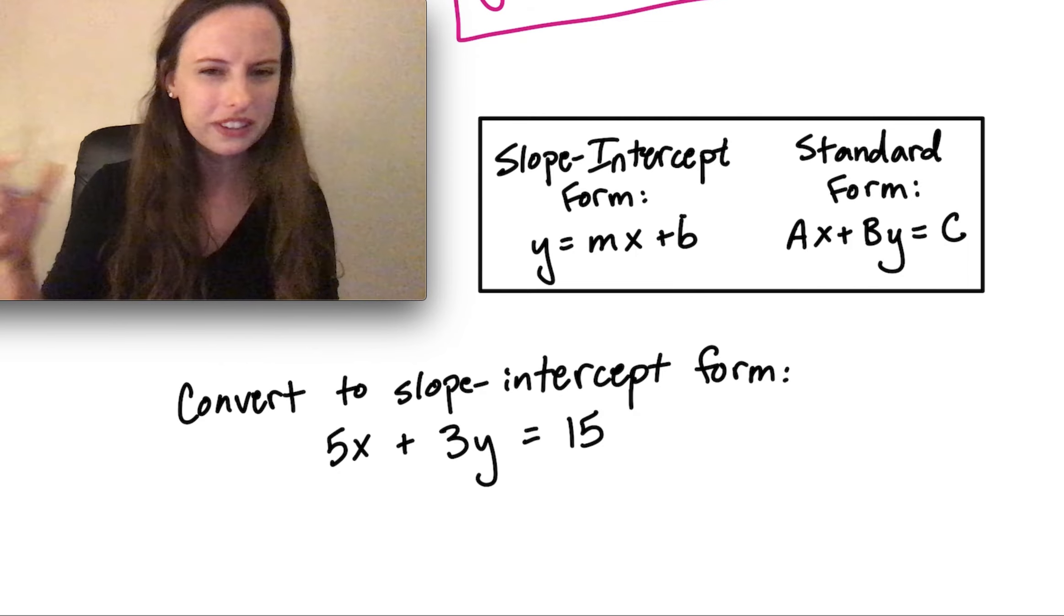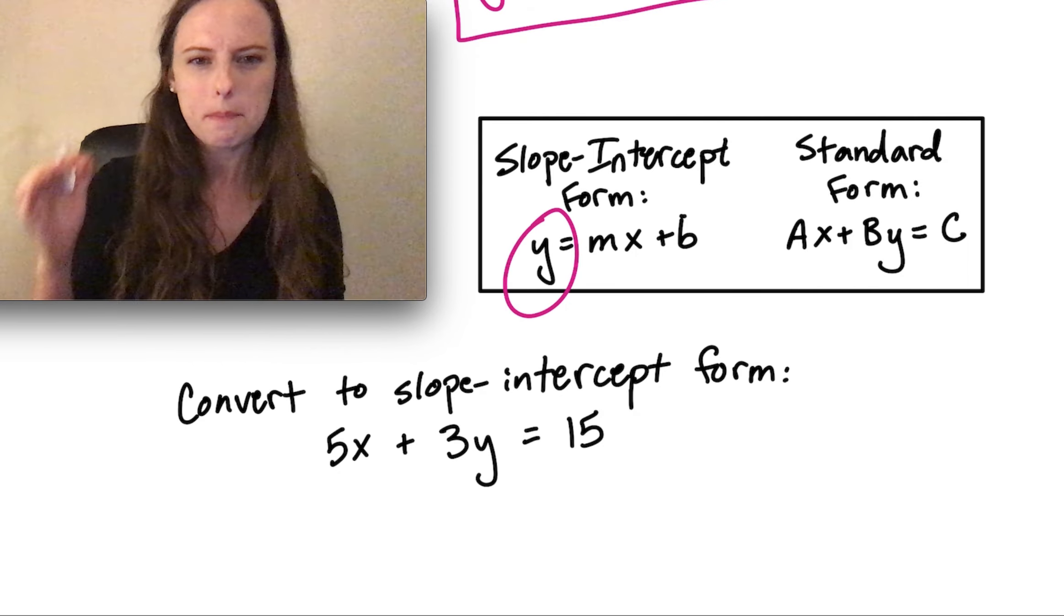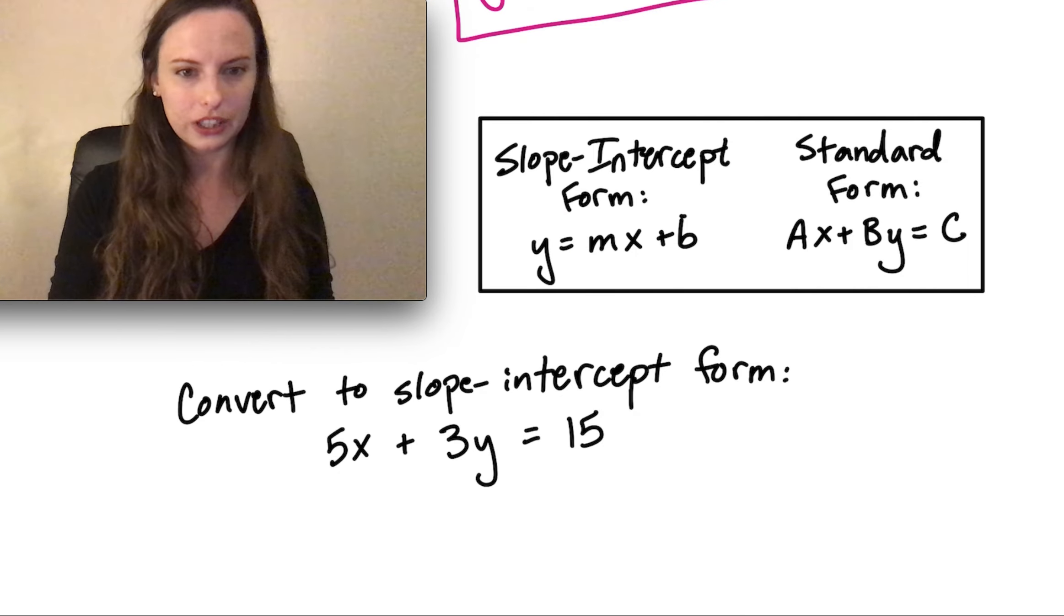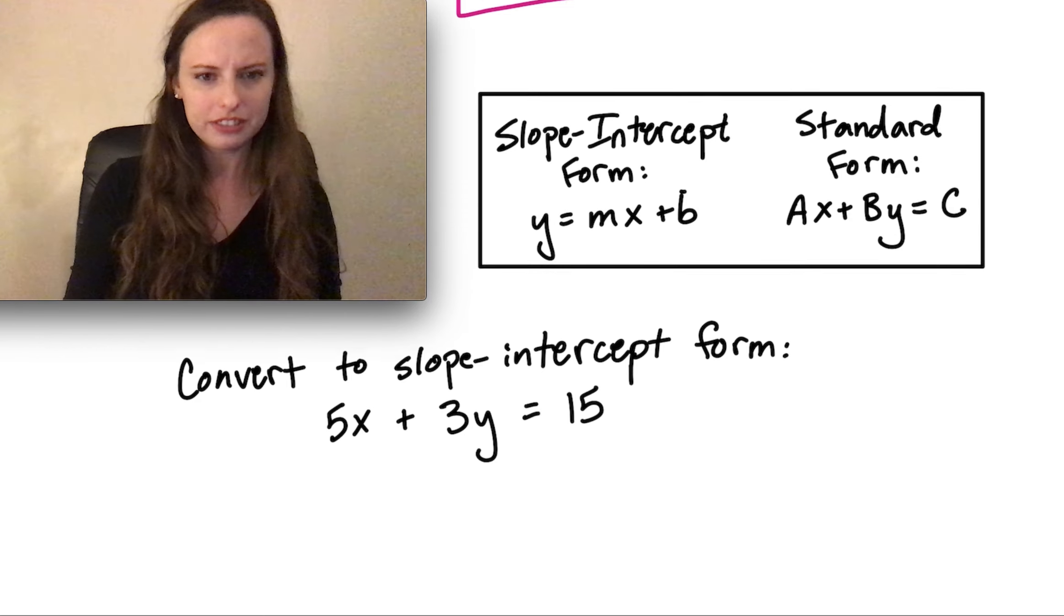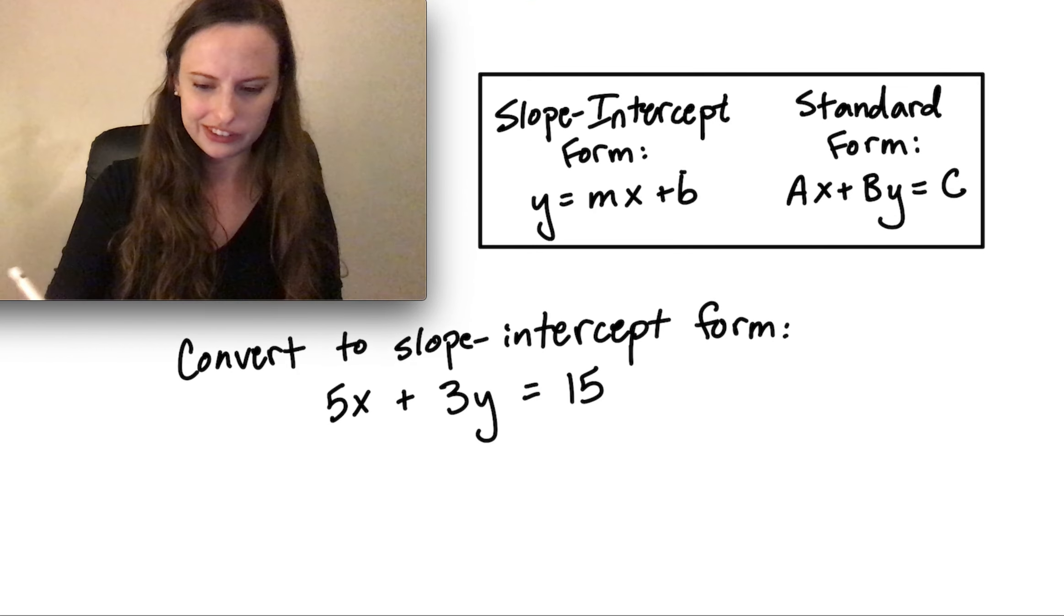Again, our goal is always to just get y by itself. Looking at this next problem, we have 5x plus 3y equals 15.